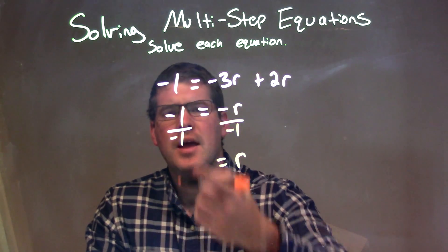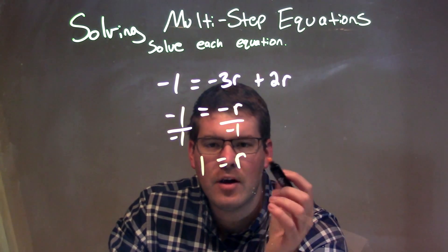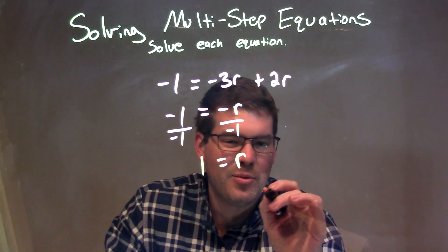Get a positive r there, and then negative 1 divided by negative 1 is a positive 1. So, we have r isolated by itself now, and our answer is just 1, so r equals 1.